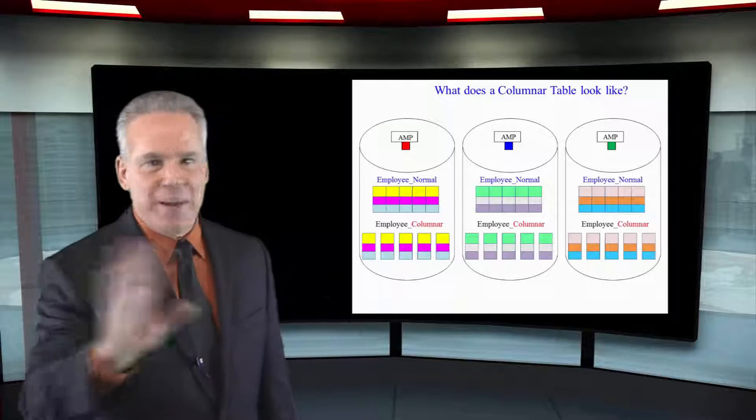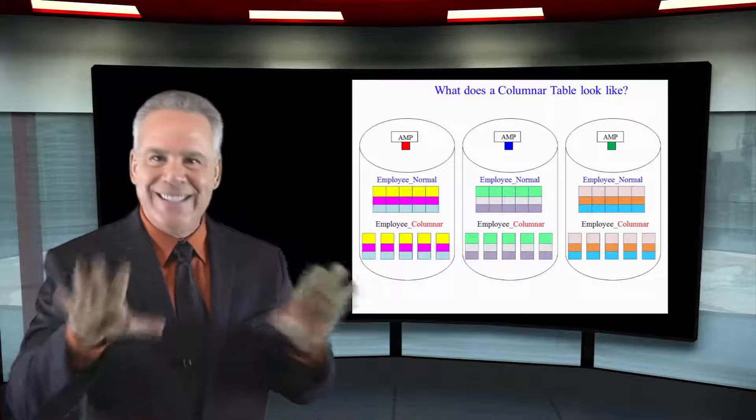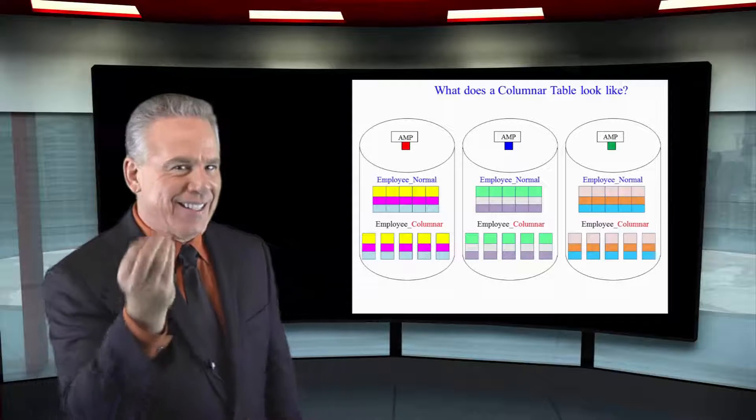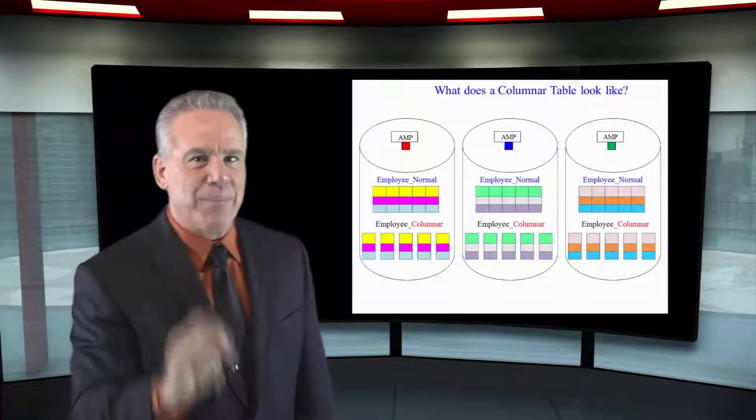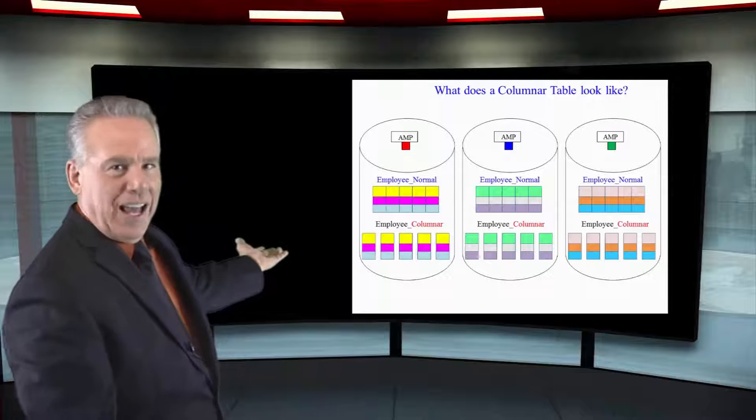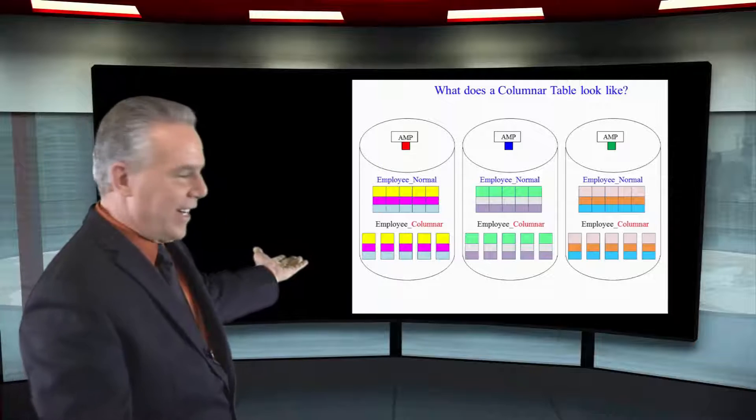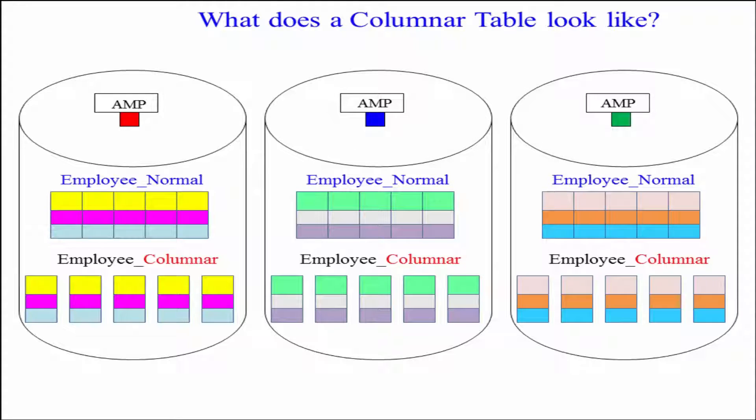Take a look below. This is the same information, same rows, same data, except it's called employee_columnar. So that's the second example. And as you can see, just like the first example, it actually had five columns in it, three rows, but it almost looks like five separate tables.